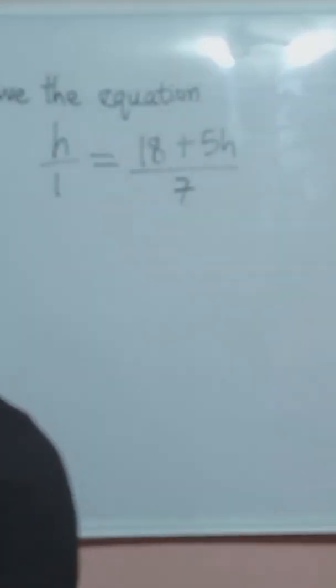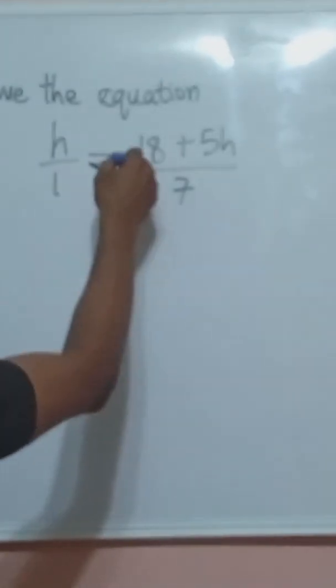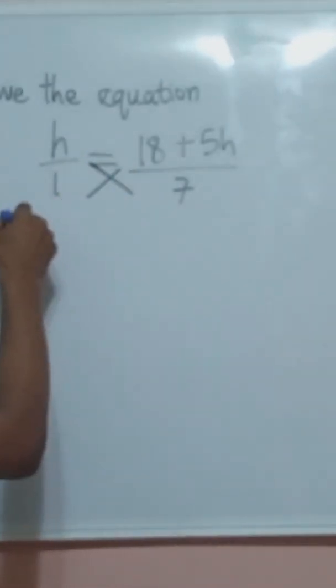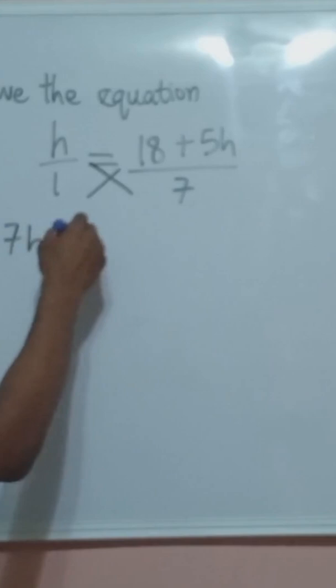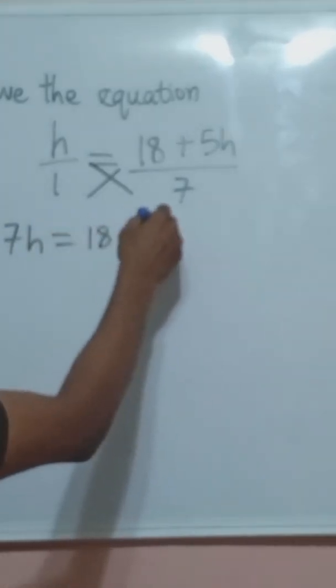Our next question says solve the equation h over 1 equals 18 plus 5h over 7. Now in this the first step is to cross multiply. So when we cross multiply we are having 7h equals to 18 plus 5h.